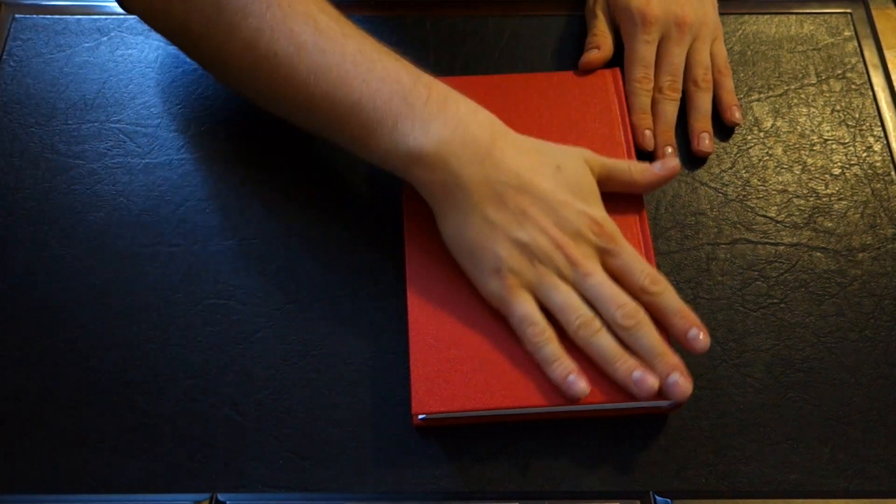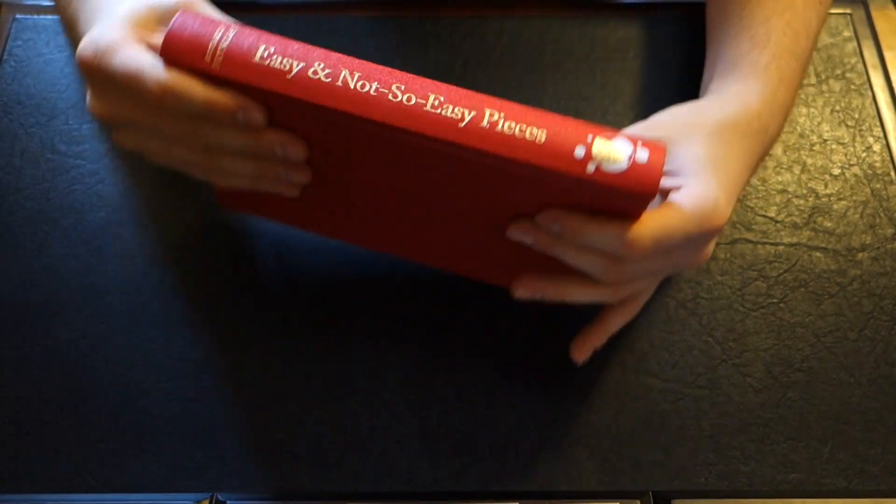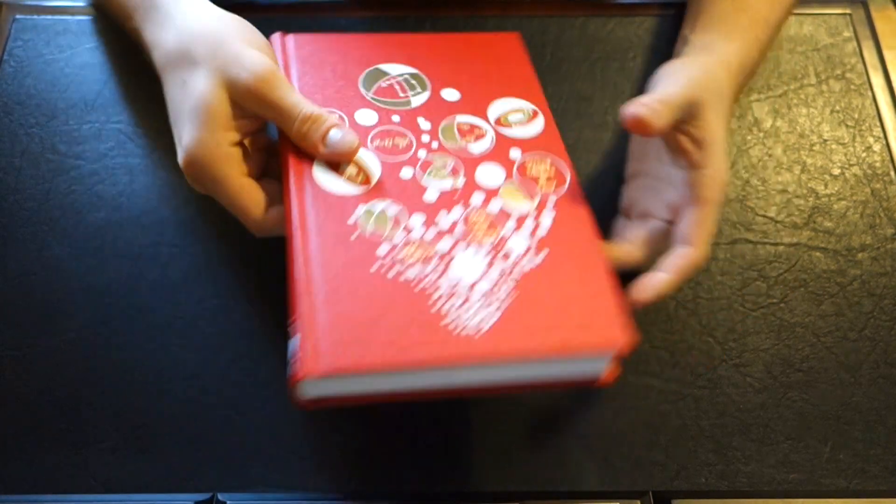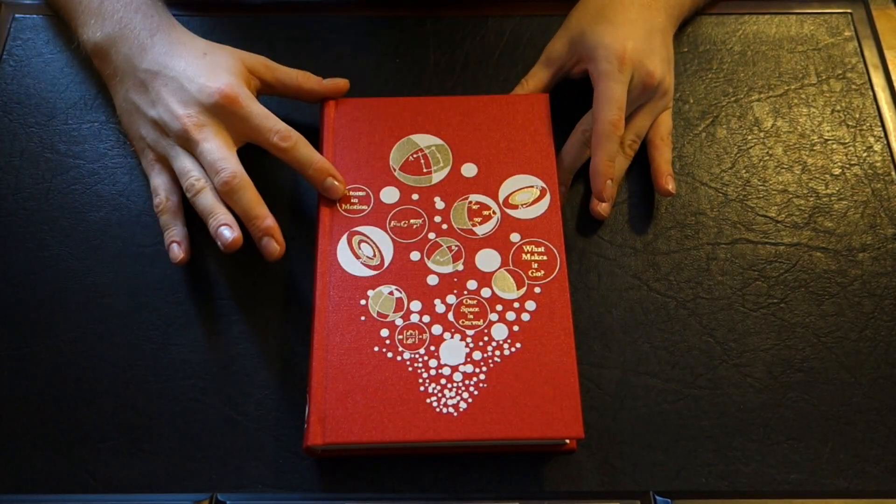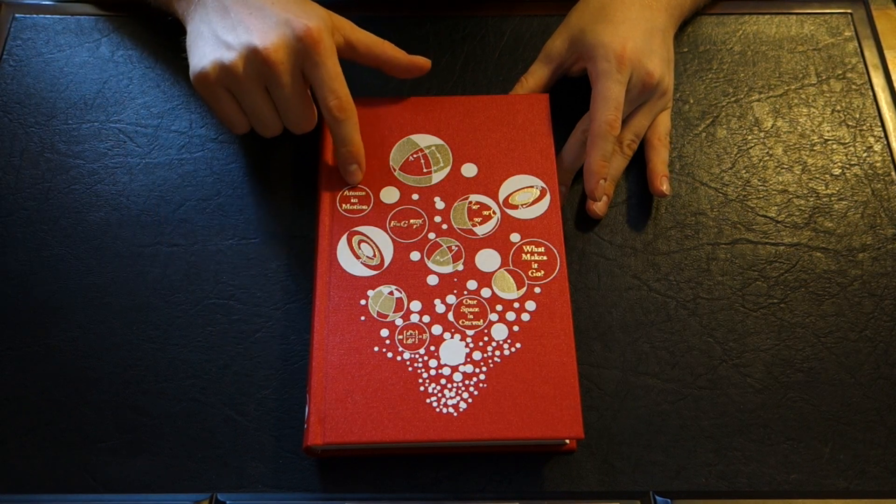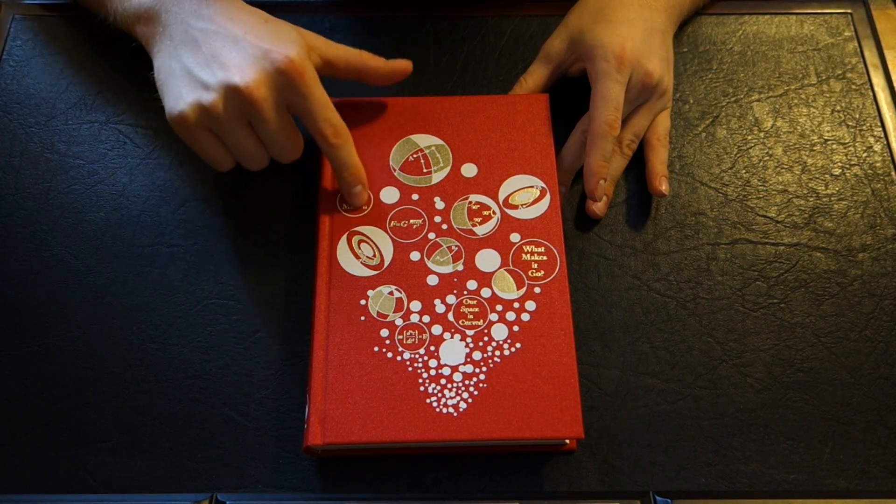A red buckram binding here with gold embossed on the side and a really nice front cover. You can see atoms in motion here inside.